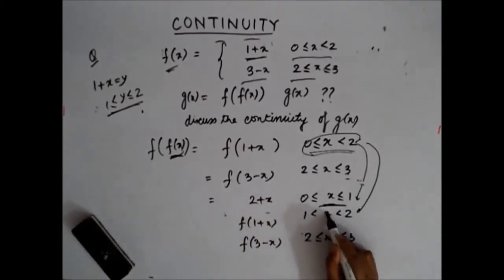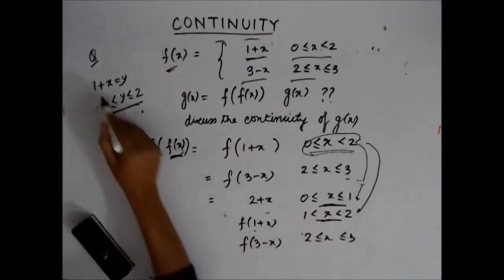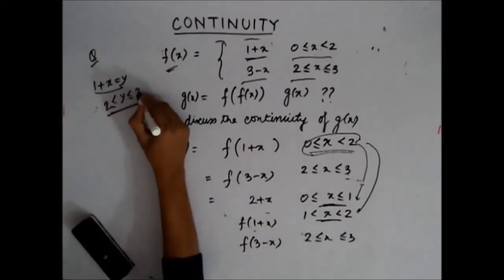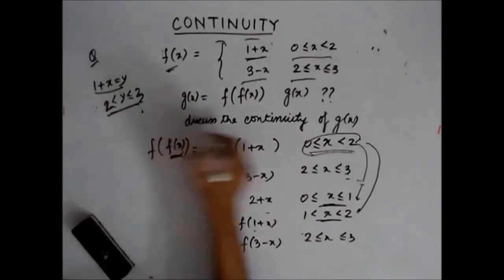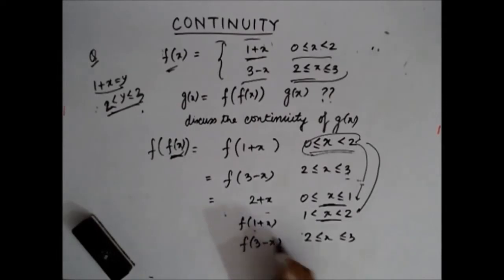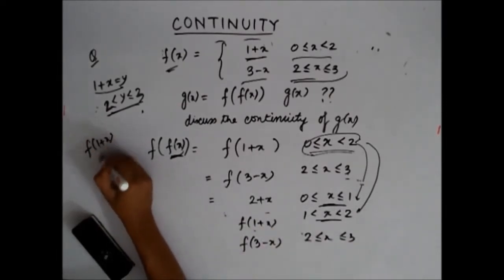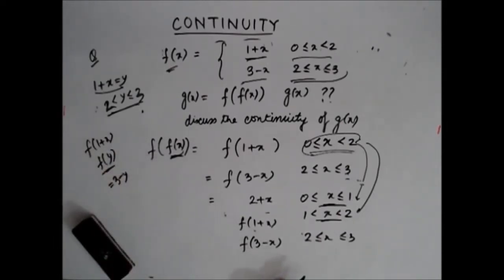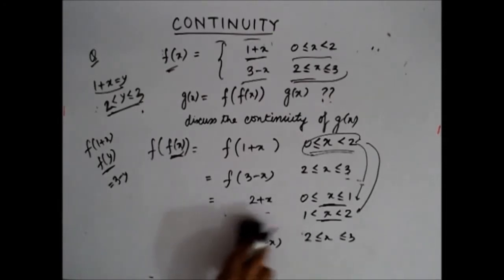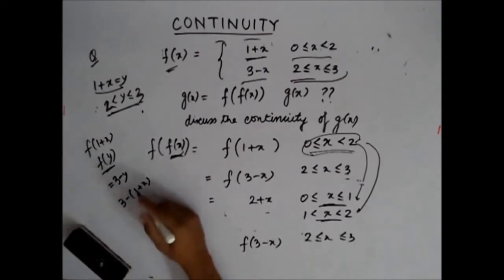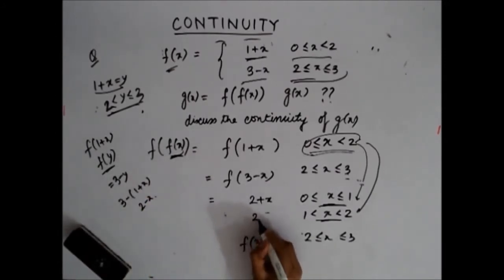If x lies between 1 and 2, then y = 1 + x lies between 2 and 3. When y lies between 2 and 3, f(y) = 3 − y. So f(1 + x) = 3 − (1 + x) = 2 − x for x in [1, 2). Now let z = 3 − x. When x lies between 2 and 3, z = 3 − x lies between 0 and 1.